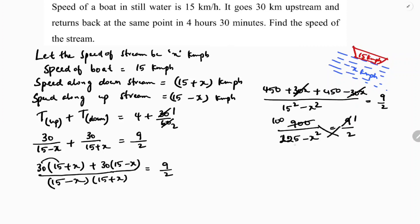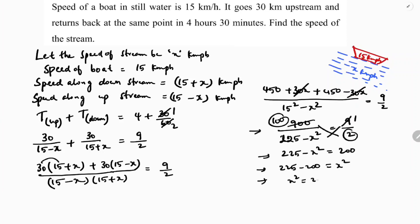Cross multiplying: 900 times 2 equals 9 times (225 minus x squared). Simplifying: 225 minus x squared equals 200. So 225 minus 200 equals x squared, giving x squared equals 25. Therefore x equals the square root of 25.